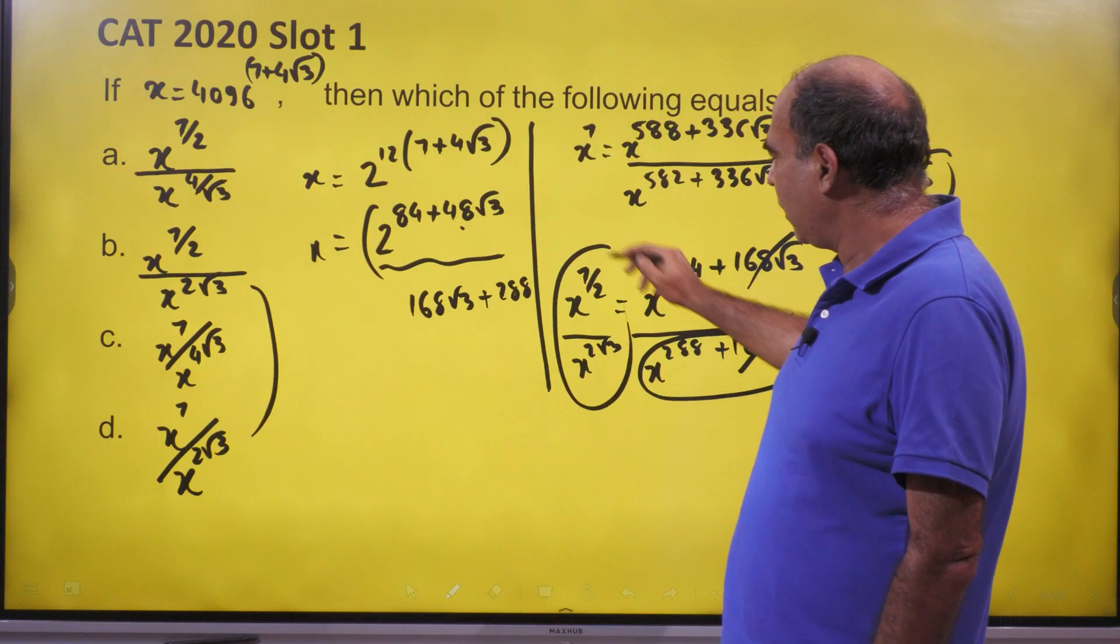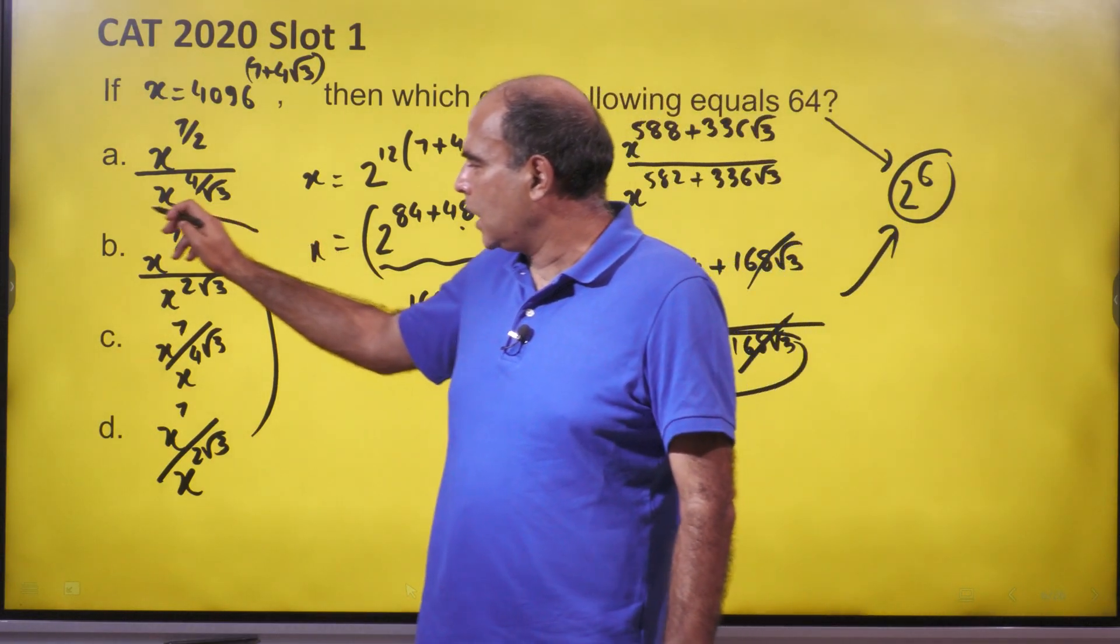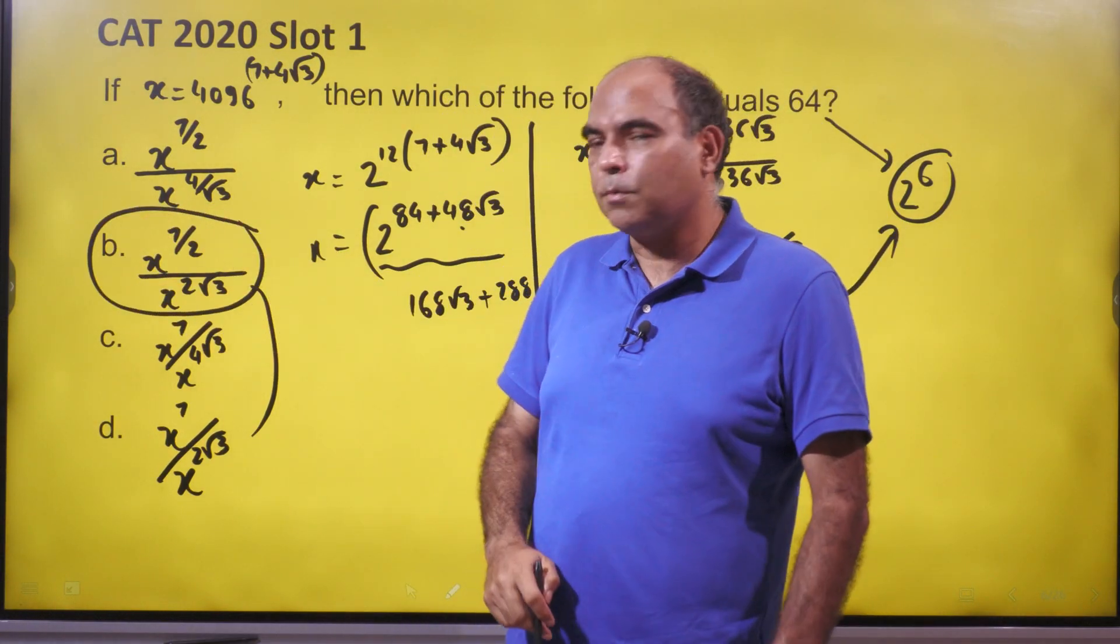And hence the correct answer is x raised to 7/2 divided by x raised to 2 root 3, and that's option B. Thank you so much.